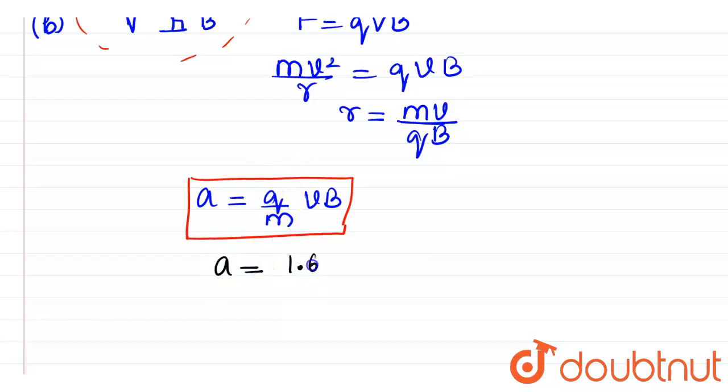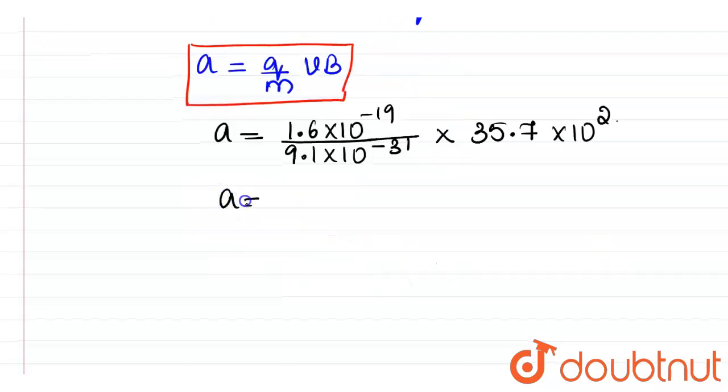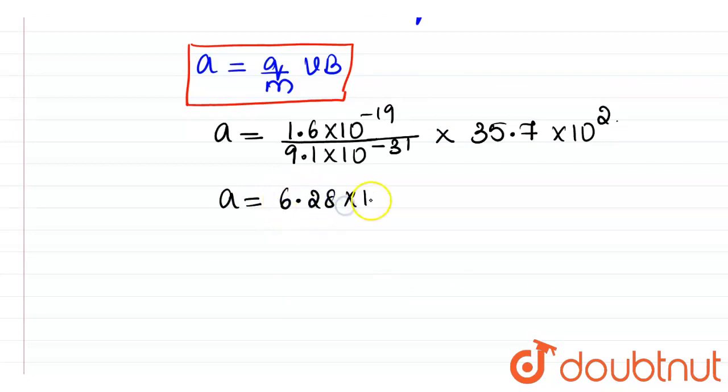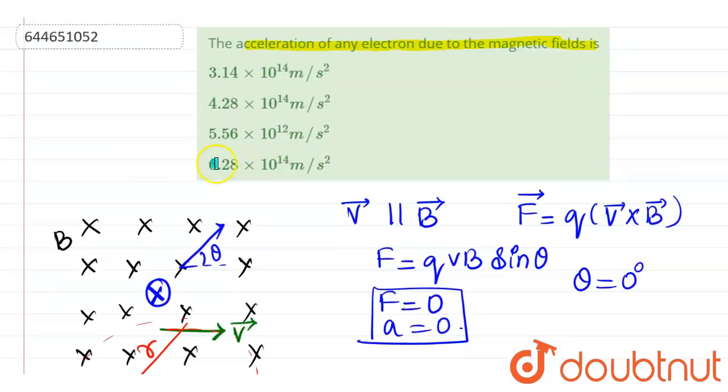So acceleration will now be charge on an electron which is 1.6 into 10 to the power minus 19, mass of an electron is nothing but 9.1 into 10 to the power minus 31, and the ratio of V by B is again a constant which will be nothing but 35.7 into 10 to the power 2. So therefore, on simplification acceleration value will now be equal to 6.28 into 10 to the power 14 meter per second square will be the acceleration of electron which is projected in the magnetic field and hence the correct option will now be option 4.